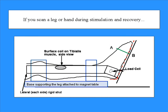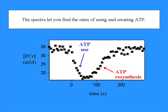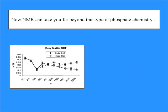If you scan a liver during stimulation and recovery, the spectrum lets you find the rates of using and creating ATP. Well, back to ATP. Yeah, you know me! We're talking ATP. The energy's the key.